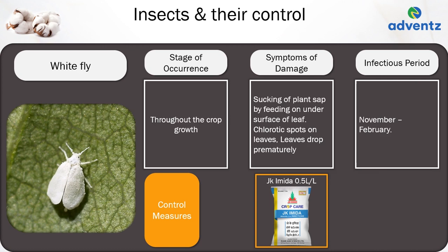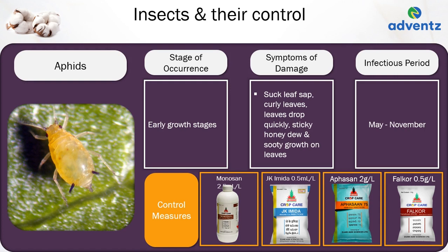The next insect is aphid. Aphid occurs in early growth stages. It sucks leaf sap, causes leaf curl, leaves drop quickly, and sticky honeydew with sooty growth on leaves is seen. The infectious period of aphids is between May and November. Control: apply Jai Kisan Monocan at 2.5 ml per litre, or JK Imida at 0.5 ml per litre, or Jai Kisan Afsan at 2 grams per litre, or Jai Kisan Falcur at 0.5 grams per litre.